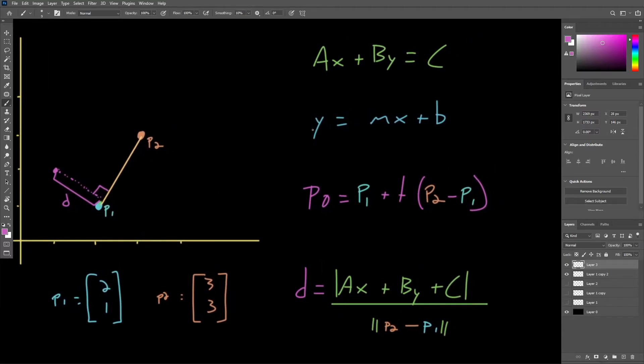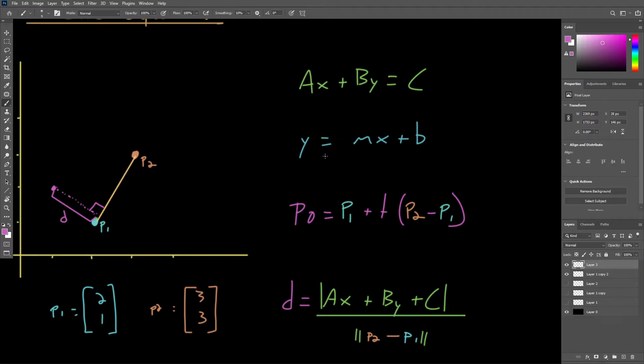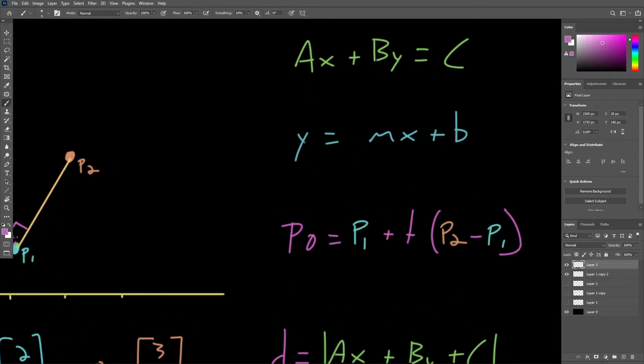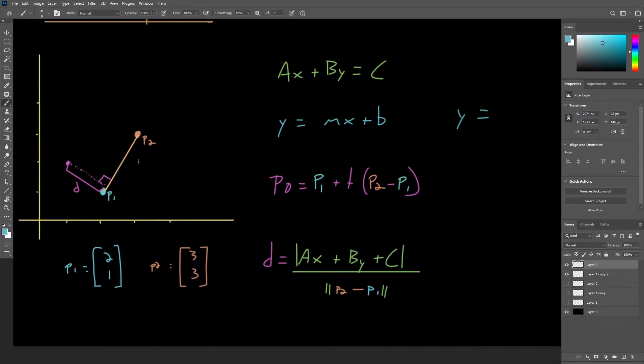Let's rewrite the slope-intercept form of this line. The slope of this line is rise over run. So the Y component changes by 2 units, and the X component changes by 1. So our slope is 2.